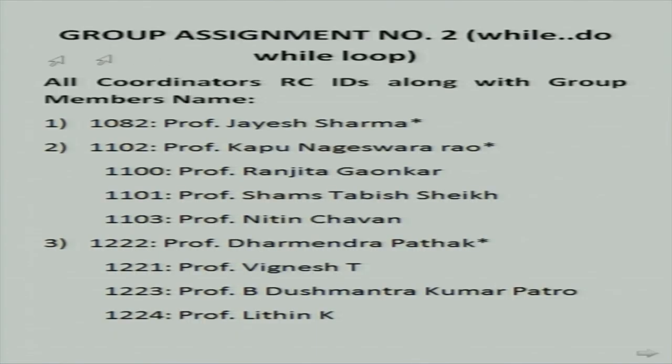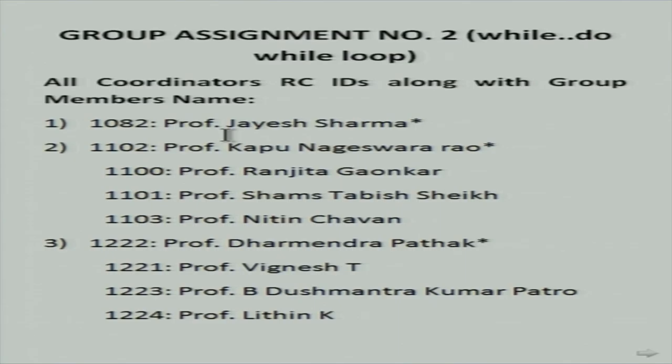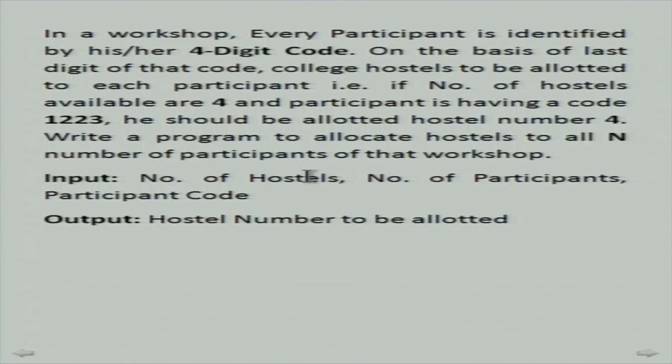We selected this problem because it demonstrates a very practical scenario. We all are assigned a four-digit RC code. In this problem, we take a number from the user and extract the last digit from that number. Based on the last digit, we assign a hostel to a particular user. The inputs are the number of hostels available and number of participants. The while loop will iterate for each participant.